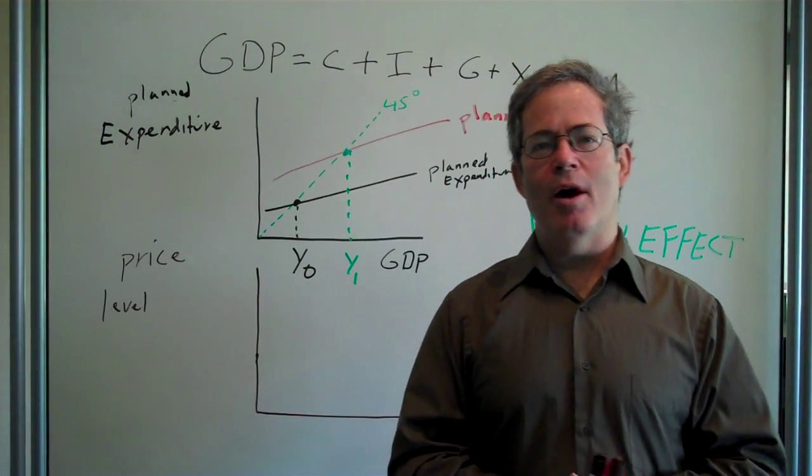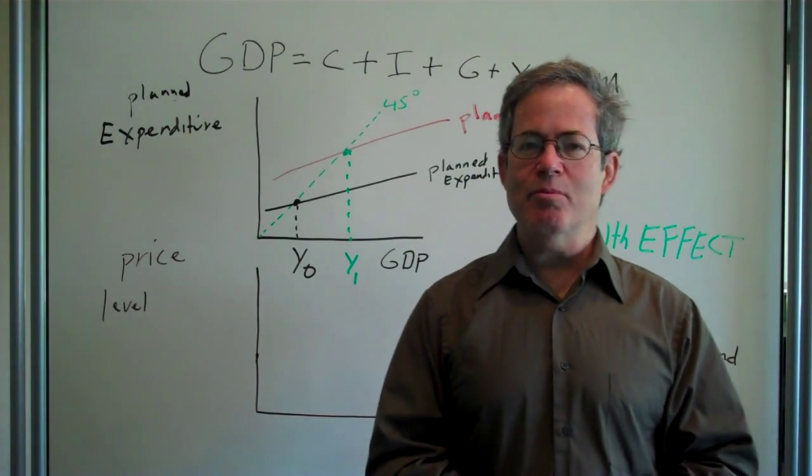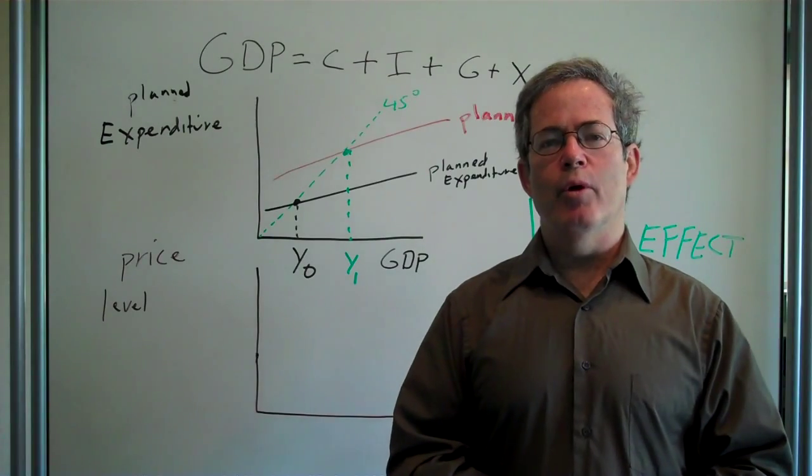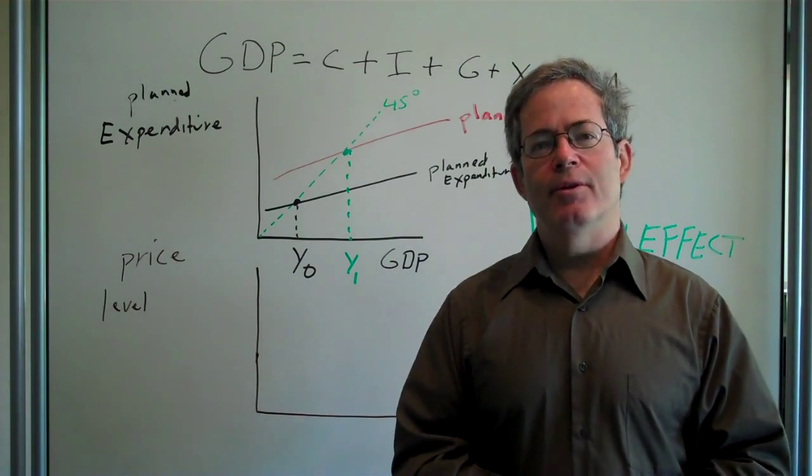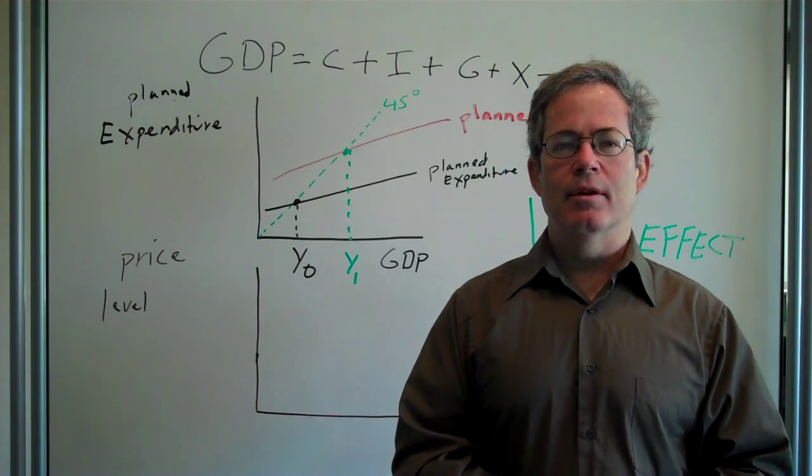Now we're going to introduce a new model, the Aggregate Demand, Aggregate Supply Model. Economists like this model because they like to put everything into a supply and demand framework. Even though that is mostly appropriate for microeconomics, there's also a macroeconomic analog to that. And that's what we'll talk about now.